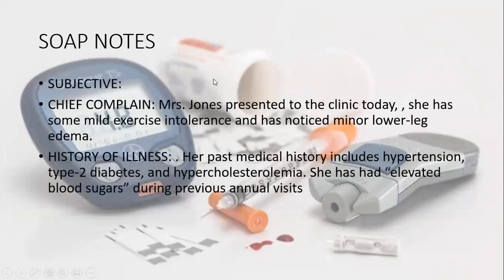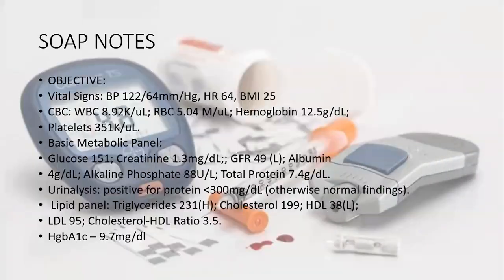In the subjective section, Mrs. Jones is presenting to the clinic with mild exercise intolerance and lower leg edema, with a history of hypertension, diabetes, and hypercholesterolemia, and elevated blood sugar during previous annual visits. Objectively, her vital signs show a BP of 102/64, which is normal, a heart rate of 64 which is slightly low, and a BMI of 25 which is approximately normal.